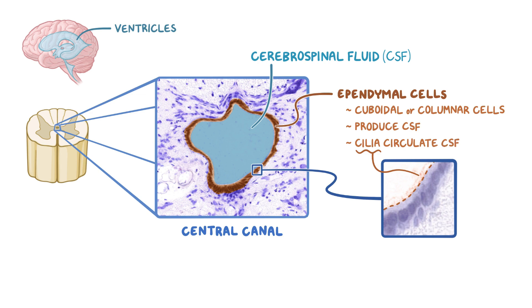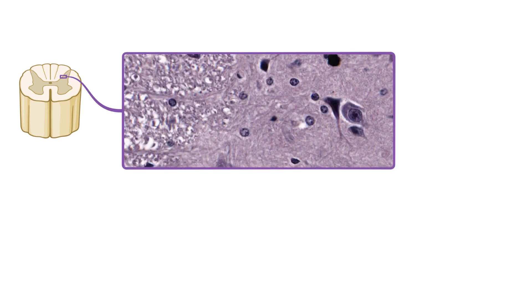The ependymal cells can also have microvilli, but they're typically too small to be seen with light microscopy. Now, let's take a closer look at the border between the spinal cord's white matter and gray matter. On the left is the white matter, where we can identify many of the purple-stained axons by the myelin sheaths that leave a white space surrounding each axon.